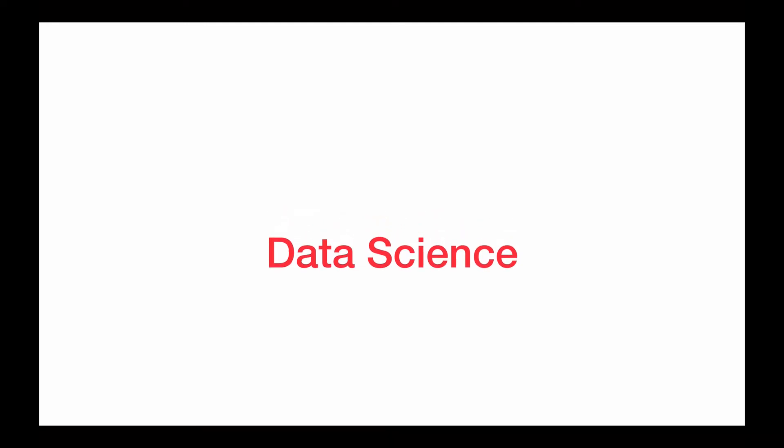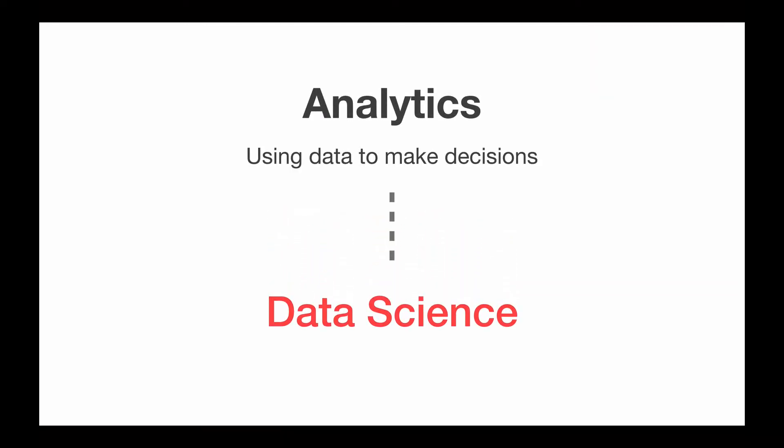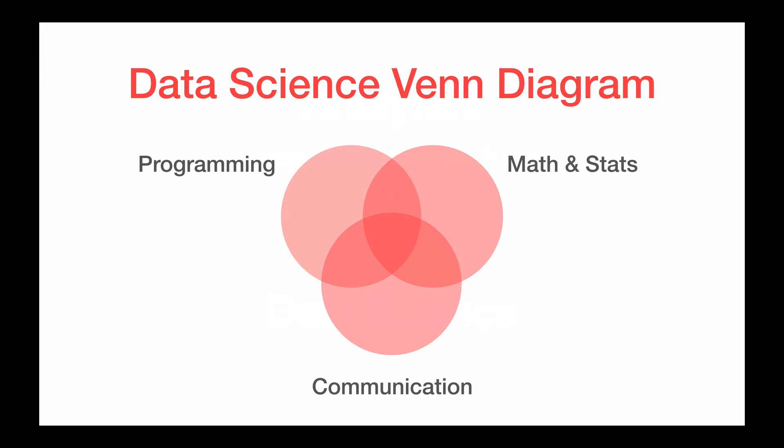So data science is under the umbrella of analytics and analytics is all about using data to make decisions. Data science in particular consists of three main skills. So this is the data science Venn diagram. And all data scientists will have these three types of skills. One is programming, so that's computer science and knowing how to code. Math and stats, so this includes some linear algebra, some calculus, some statistics. And then finally communication. So after you've done all that number crunching and coding, can you wrap it all together in a story and communicate your insights?